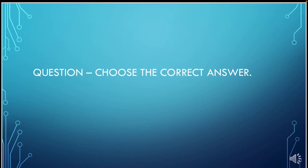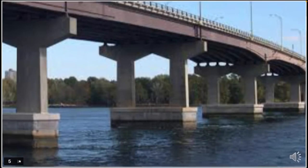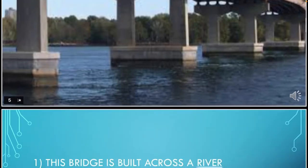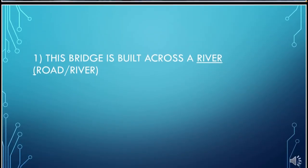Question: Choose the correct answer. What do you see in this picture? This is the picture of a bridge. Tell me, is this bridge built across a river or a road? This bridge is built across a river. The options were road or river, and you chose the correct answer: this bridge is built across a river.